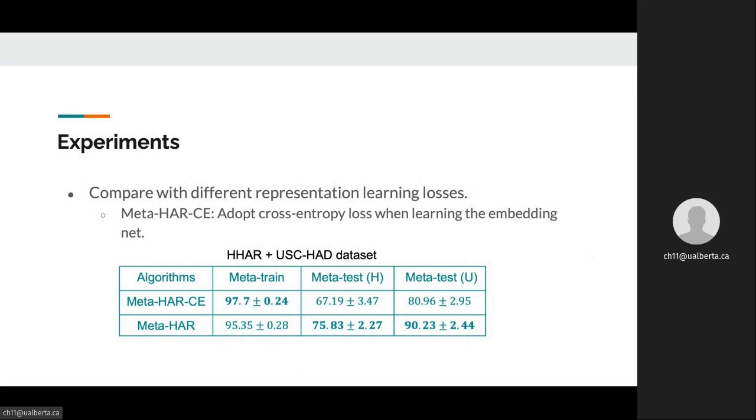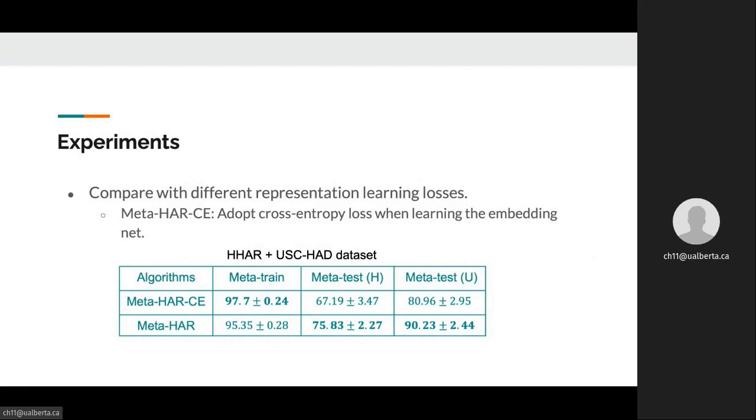For more detailed experimental results, please refer to our full paper. In conclusion, our Meta-HAR framework is suitable for federated learning scenarios where heterogeneity in both label and signal distribution exists, and a personalized model is preferred. Future work can focus on applying this framework to other popular federated learning tasks. Also, in real-world applications of federated learning, the communication and computational constraints of mobile devices should be taken into account. Thank you for watching.